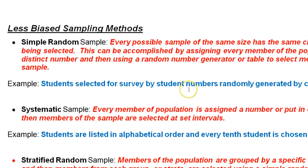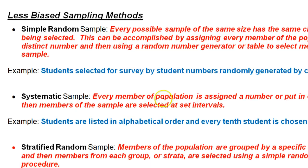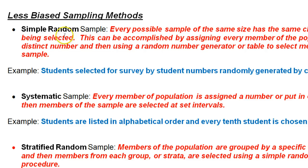We have four more methods that are less biased than that. The least biased is called simple random. That's where every single individual in the population gets a number or some identifying thing that can be randomly generated, and so by using a computer or a calculator you can just randomly pick the members of a sample.